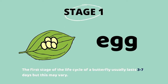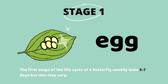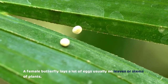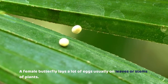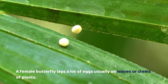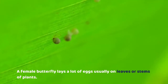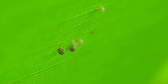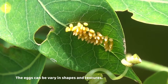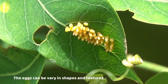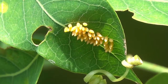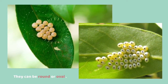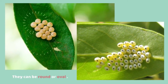Stage one: egg. It all starts when a female butterfly lays her eggs, usually on leaves or stems of plants. Inside these tiny eggs, caterpillars grow. Depending on the species, the eggs can vary in shape and texture. They can be round or oval and smooth, bumpy or wrinkled.